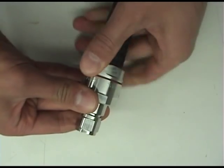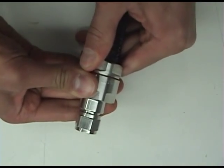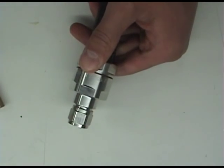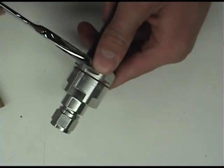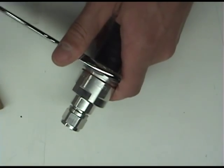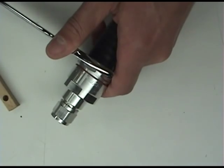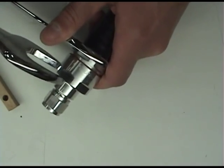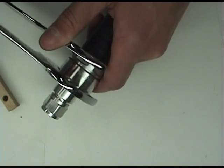First, tightening with your fingers, and then using two wrenches. Remember, when using the wrenches, hold the connector head steady while you turn the clamping nut.